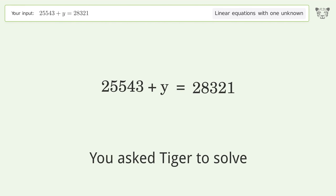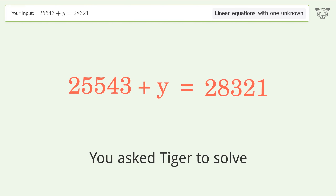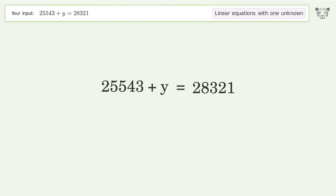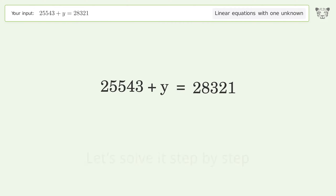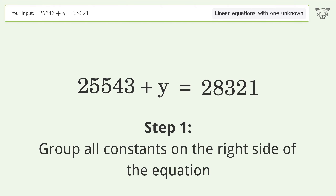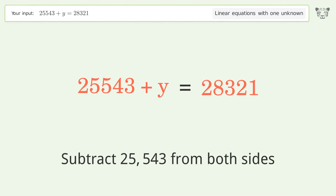You asked Tiger to solve this — it deals with linear equations with one unknown. The final result is y equals 2778. Let's solve it step by step: group all constants on the right side of the equation by subtracting 25,543 from both sides.